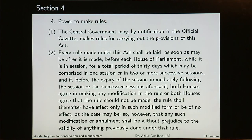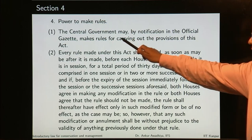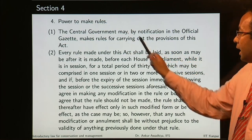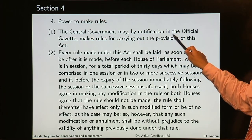This is why this act becomes so powerful. In section 3B, offenses are by government departments and authorities — you will not find offenses by private parties in the whole of the act. Section 4 deals with power to make rules. The central government may, by notification in the official gazette, make rules for carrying out the provisions of this act. The central government — not the state government — can make rules, and these must be notified in the official gazette.